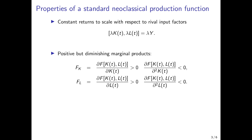Intuitively, consider a firm that employs capital and labor to produce cars, where capital is the assembly line and labor is the workers. If you hold the assembly line fixed and increase the number of workers, initially you can add a second shift, even a night shift, and increase output. But at some point, the assembly line gets crowded. Hiring additional workers yields less and less additional output.